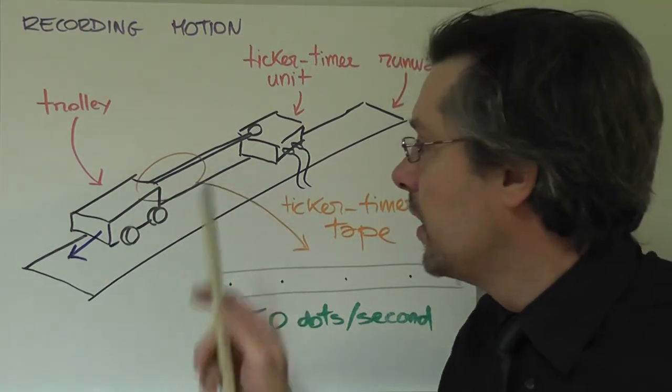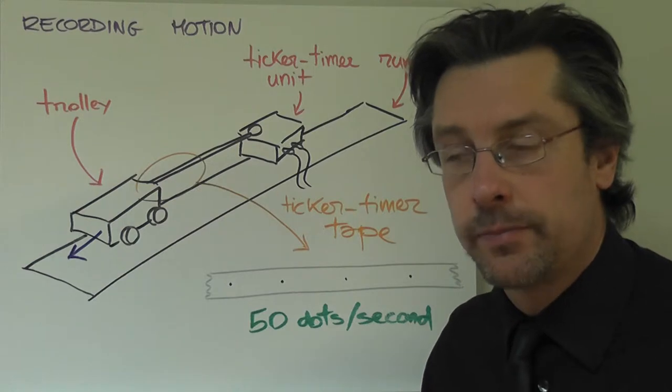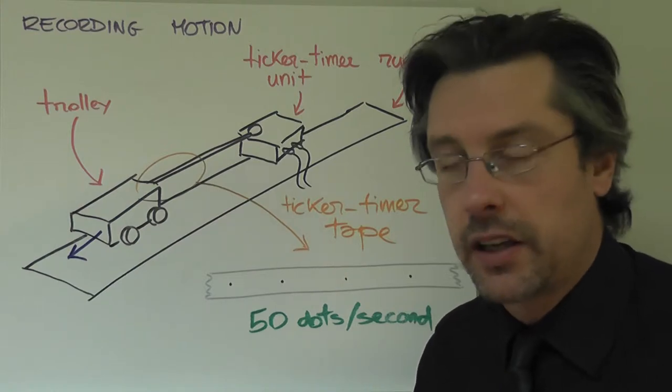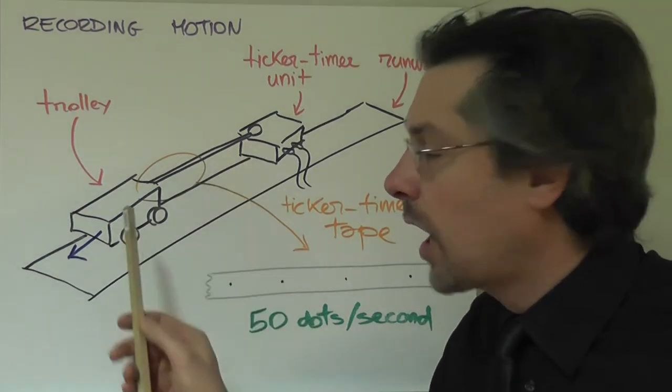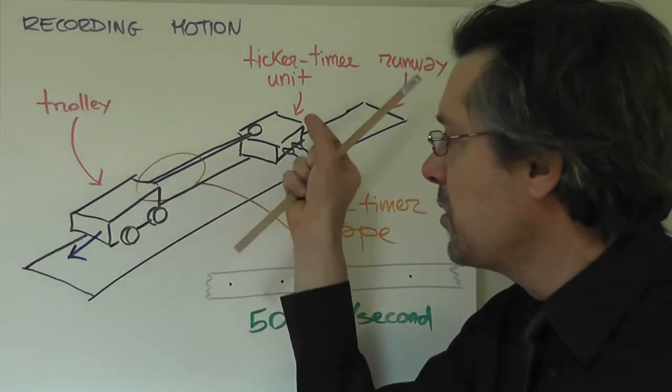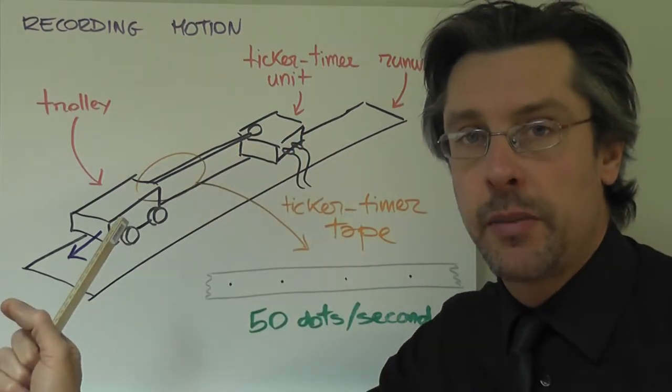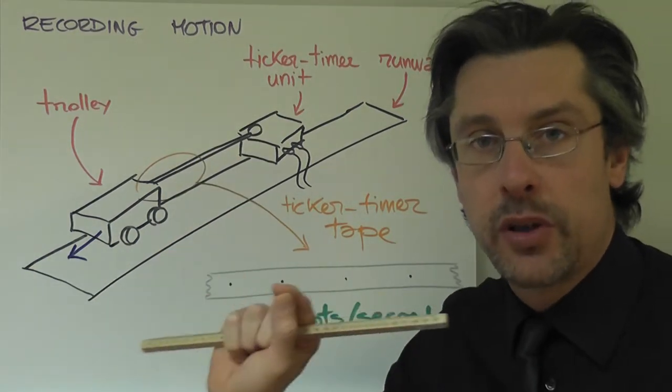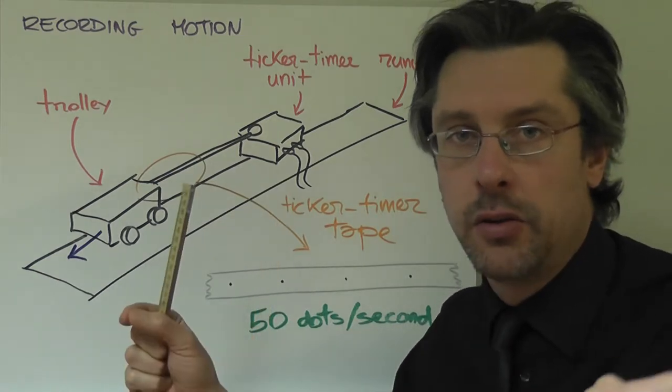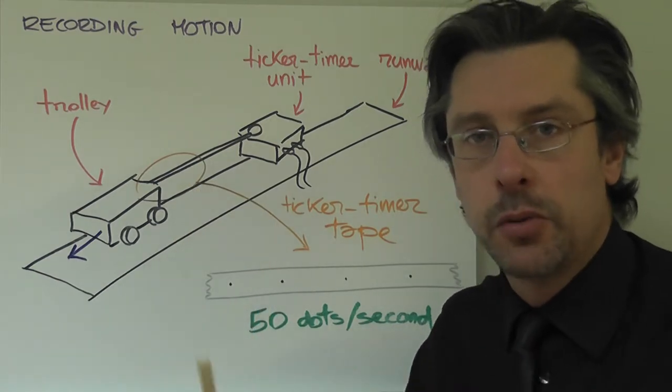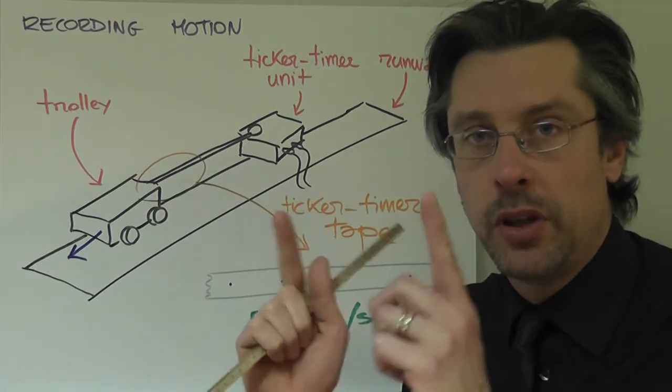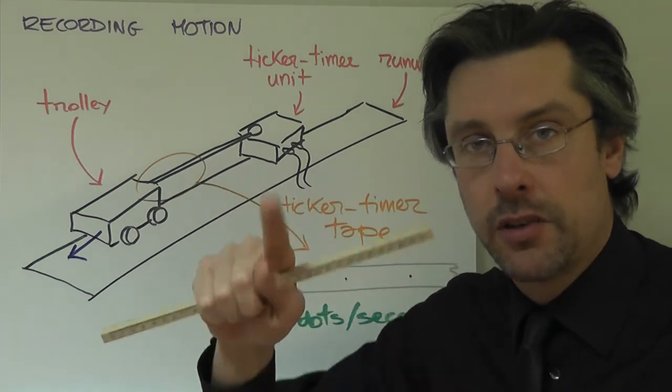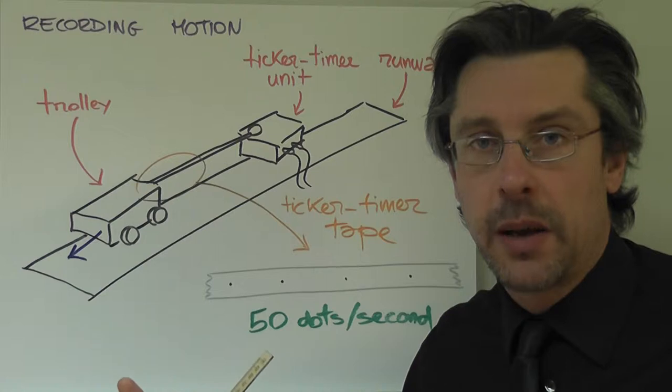Now a ticker timer unit has inside a little pin that goes up and down 50 times per second. Carbon tape is pressure sensitive, so as you pass carbon tape through the ticker timer unit, the pressure of the pin will leave a very small dot. As you pass the tape you will see a series of dots, and between two consecutive dots you know there is 1/50th of a second because the pin goes up and down 50 times per second.